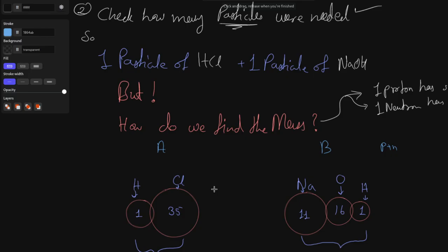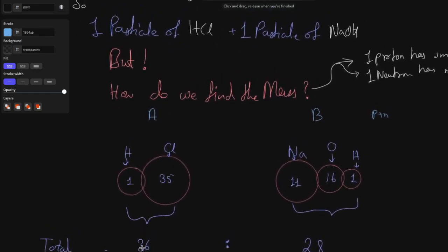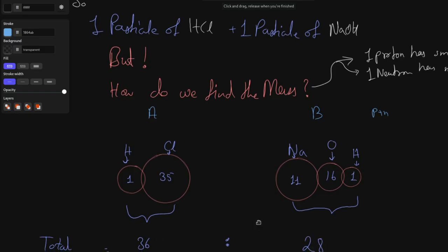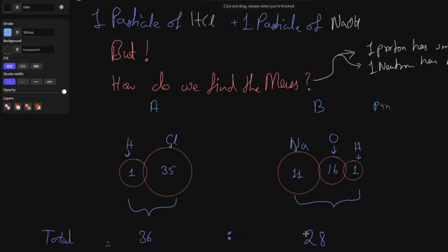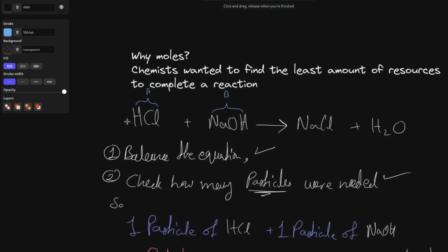Perhaps we can add the atomic masses together, because this is a single particle — it moves around as one unified thing. So let's add these together: for particle A (HCl) we get 36 atomic mass units, and for particle B (NaOH) we get 28. This ratio of 36 to 28 atomic mass units represents one particle of A and one particle of B — the same core concept from the balanced equation, but now transformed into particle masses.